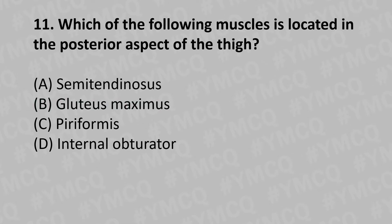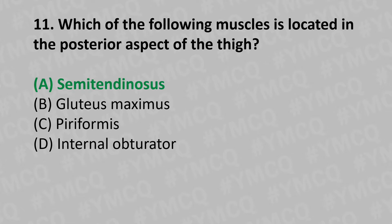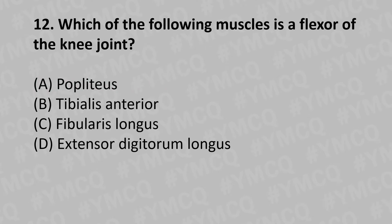Moving to our eleventh question: which of the following muscles is located in the posterior aspect of the thigh? Option A: semitendinosus, Option B: gluteus maximus, Option C: piriformis, Option D: internal obturator. And the answer is Option A: semitendinosus.